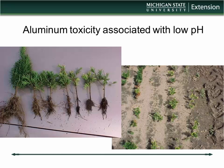We can run into situations where pH is too low and aluminum toxicity becomes a problem, because aluminum availability increases as pH goes down. Here's a nursery in west Michigan with yews — looking across the field you can see plants getting smaller and sparser. As pH went down across the field, aluminum concentration in tissue samples was going up and up. So you have to be careful not to let pH get too low, or you can run into aluminum toxicity problems.